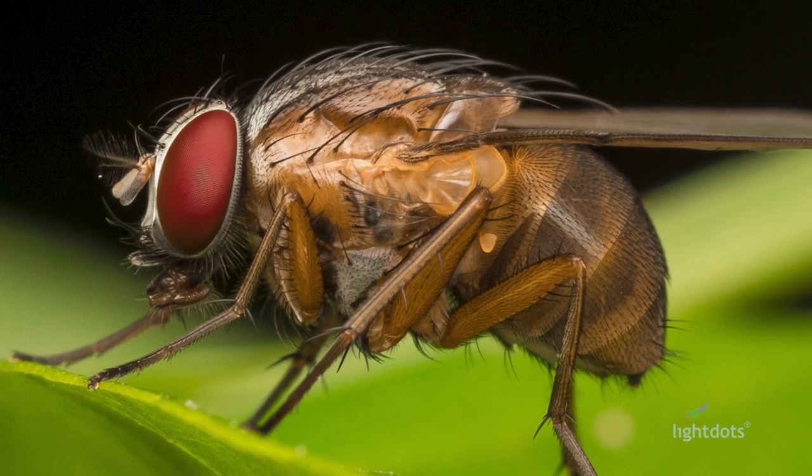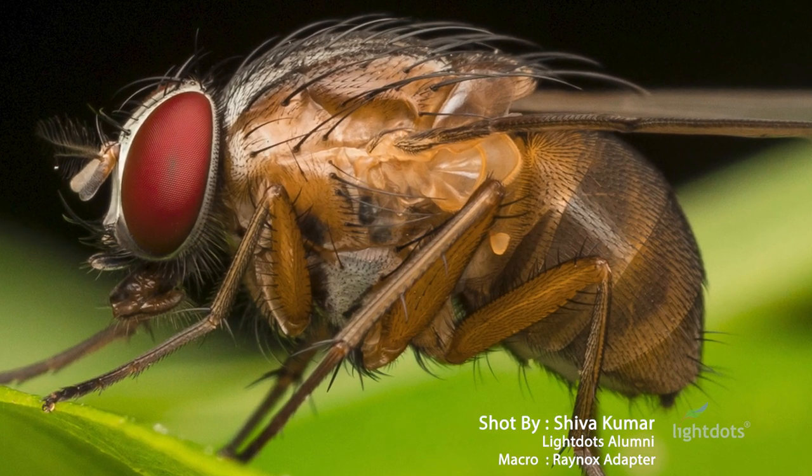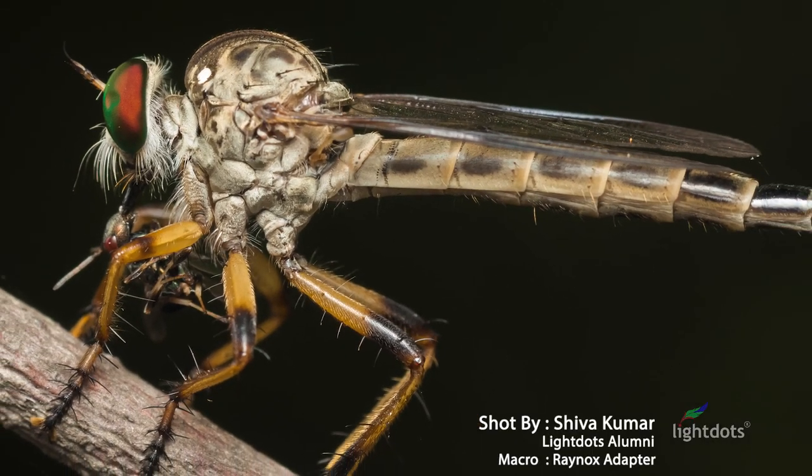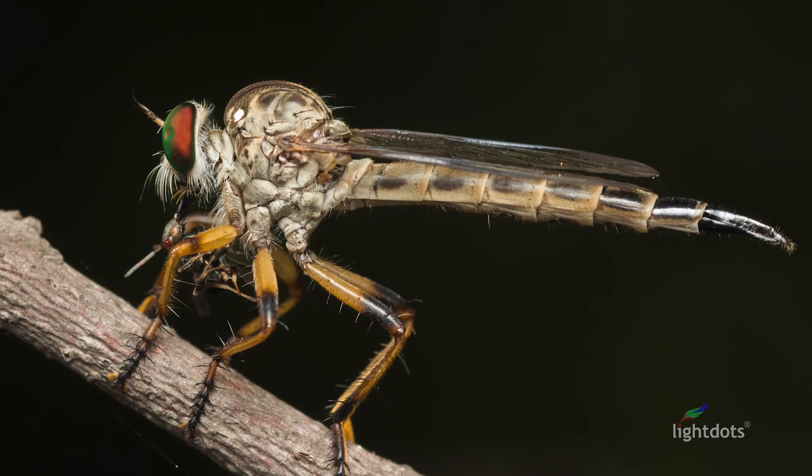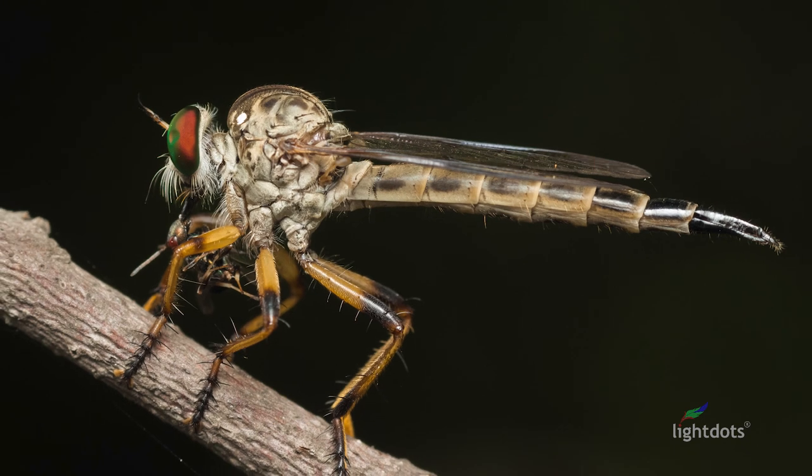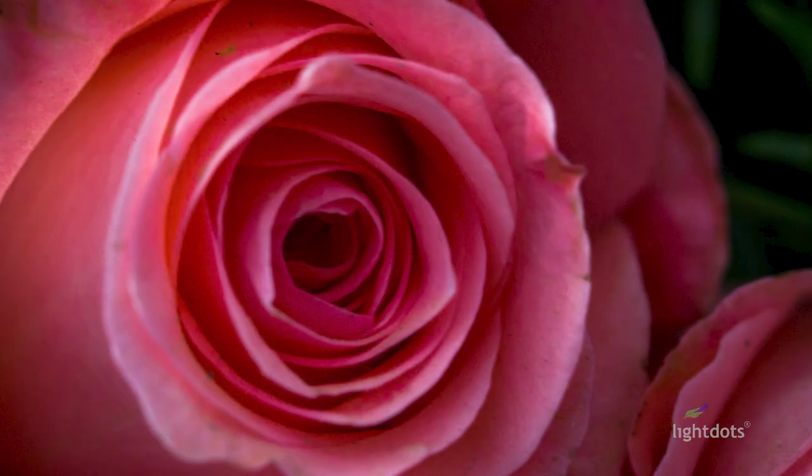Let me share with you some examples. These shots are done by my students. Look at this shot, this is done with an auxiliary close-up lens. You can still do an amazing job with little investment. It's really amazing to do macro photography. Look at this image, this is another example where he has used extension tube. This image is shot with a dedicated macro lens.